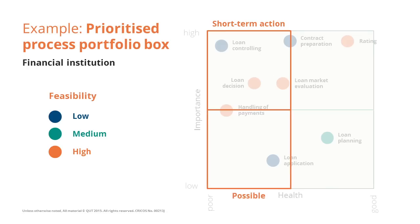Other processes to consider are those in the bottom left quadrant: poor health and relatively low importance. These are typically candidates for outsourcing. They are not strategically very important, so we can lose control over the way these business processes are performed by outsourcing them to an outside company.